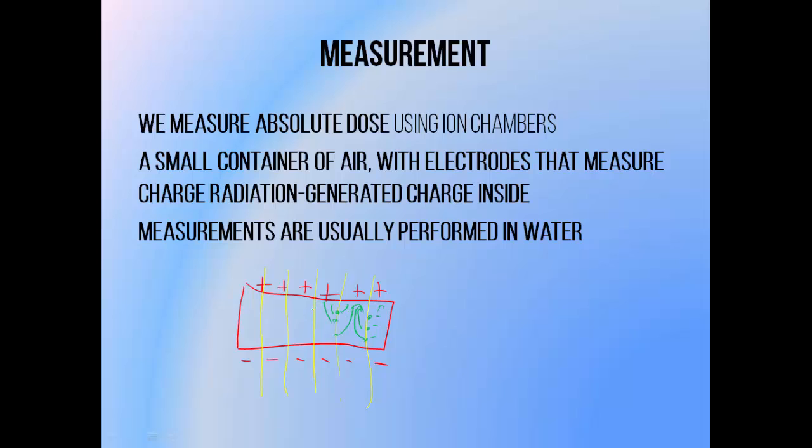Putting a voltage across the chamber causes one wall or electrode to become positive and the other to become negative. The negative charges tend to move towards the positive end, and positive charges tend to move towards the negative. We can measure the amount of charge reaching these walls or electrodes using an electrometer, which would connect to the ionization chamber.